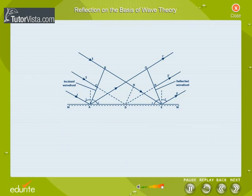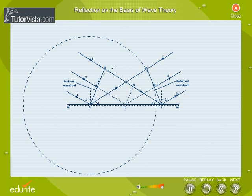With points A and D as centres, circles of radii BR and HR respectively are drawn. These circles represent the secondary wavelets. Now, the tangent to all secondary wavelets gives the reflected wavefront. RG represents the reflected wavefront.